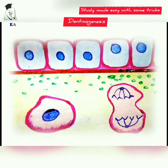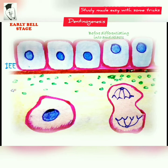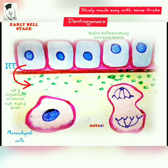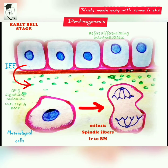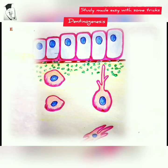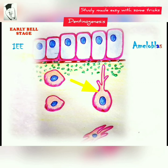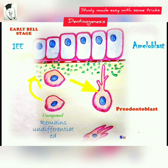In early bell stage, before differentiating into ameloblasts, the inner enamel epithelial cells secrete growth factors and signaling molecules like insulin-like growth factors, transforming growth factors, and bone morphogenetic proteins. These induce the undifferentiated mesenchymal cells to undergo mitosis, with spindle fibers appearing perpendicular to the basement membrane. The cell divides into two daughter cells: the one exposed to growth factors differentiates into a pre-odontoblast, and the unexposed one remains undifferentiated as the subodontoblast.